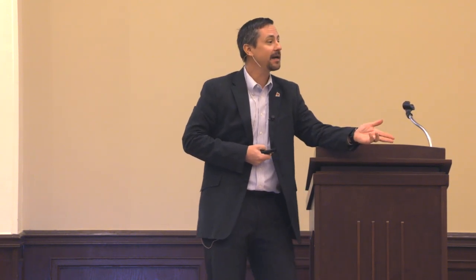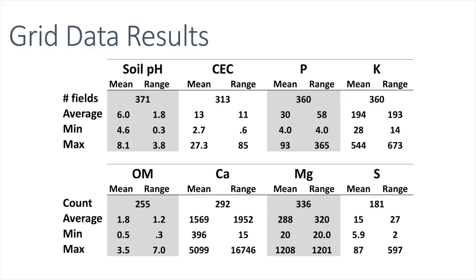About 27% of the fields have a pH range greater than 3 units. So if you pull a composite that comes back at a 6, that means 27% of fields have a pH range that goes from 4.5 to 7.5. Are you shocked? No, but this documents it. The crazy thing was when I had 80 fields the average pH was 6.1 and the range was 2. All I have done by adding more and more fields is the numbers haven't changed much — they go up or down by about one unit.